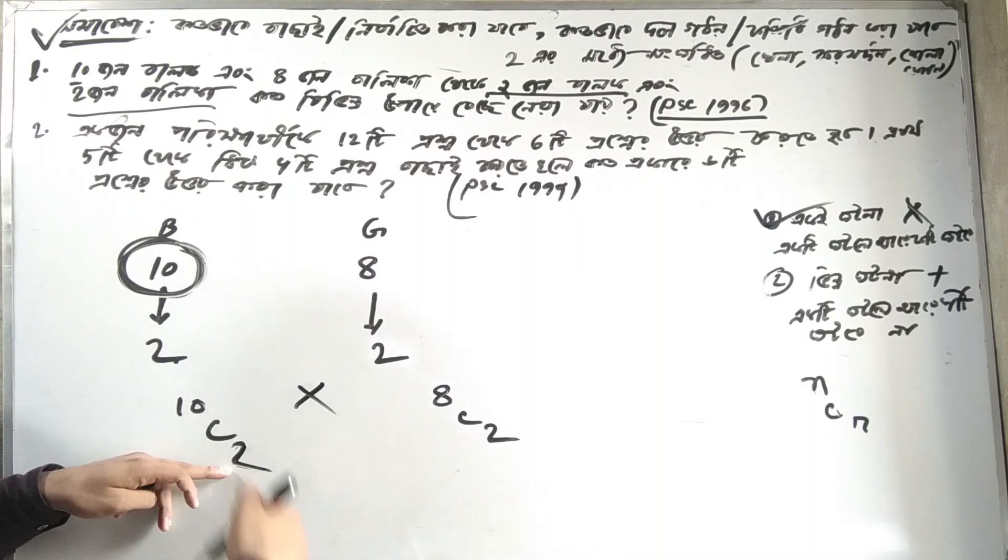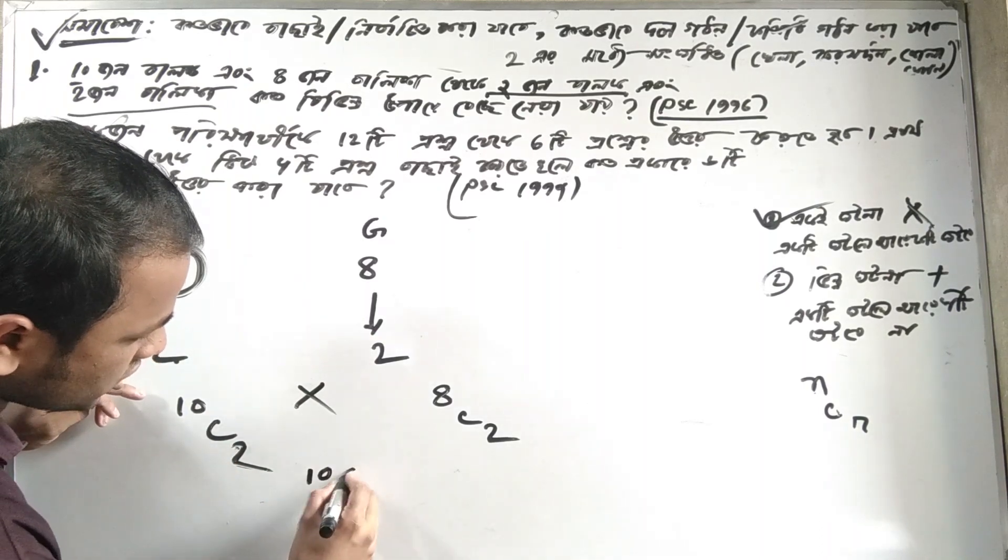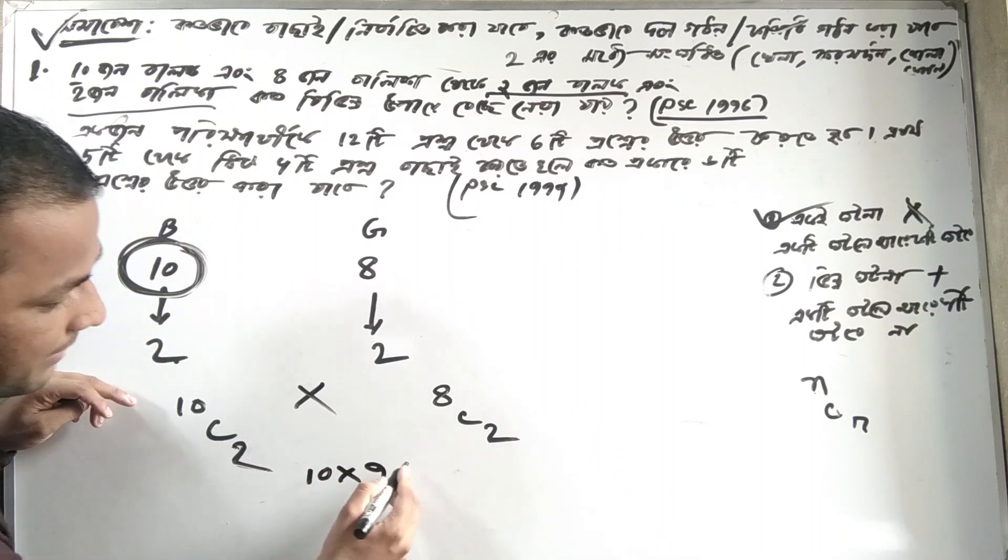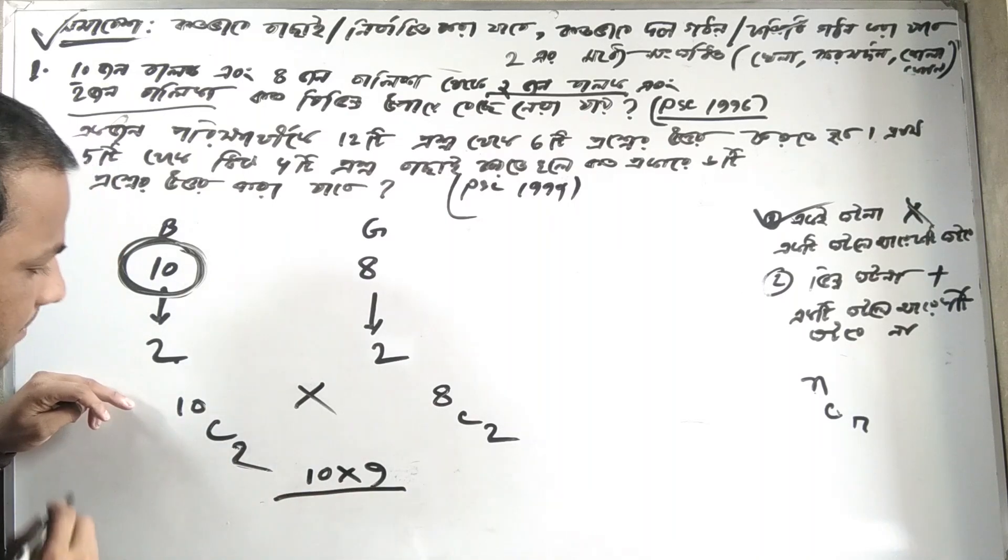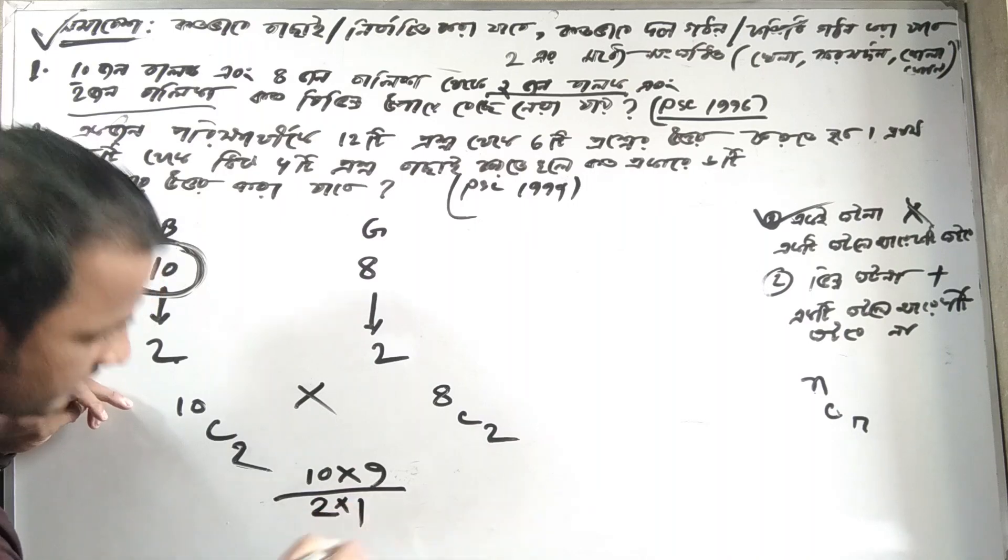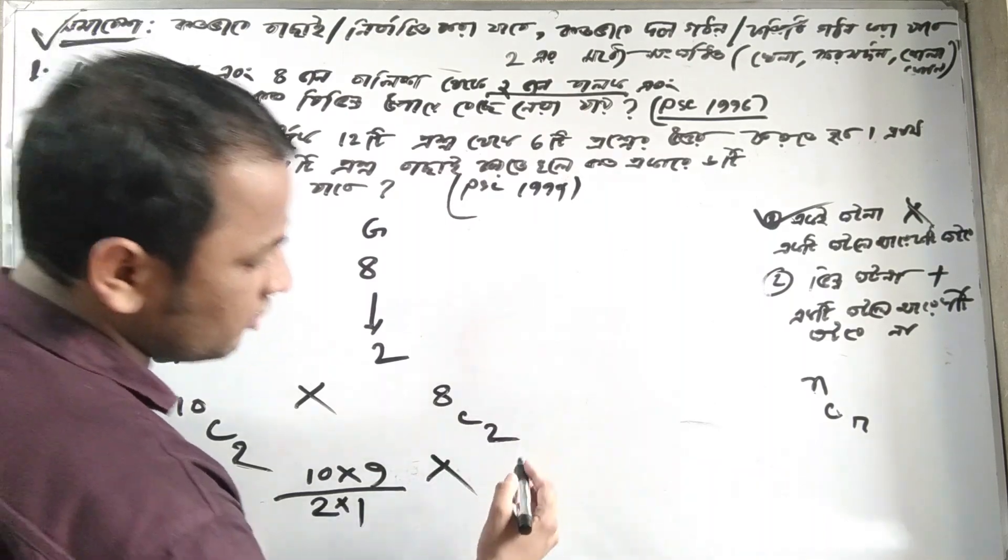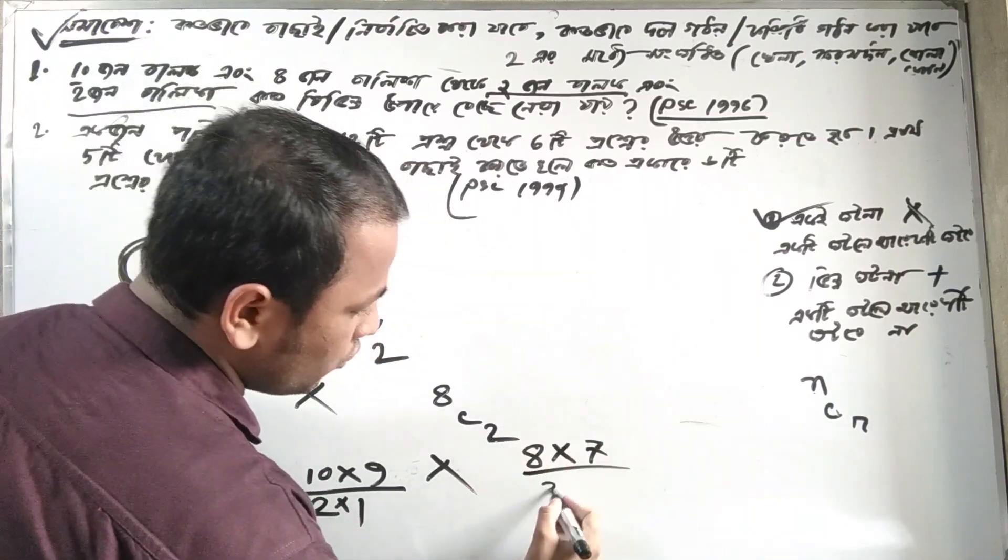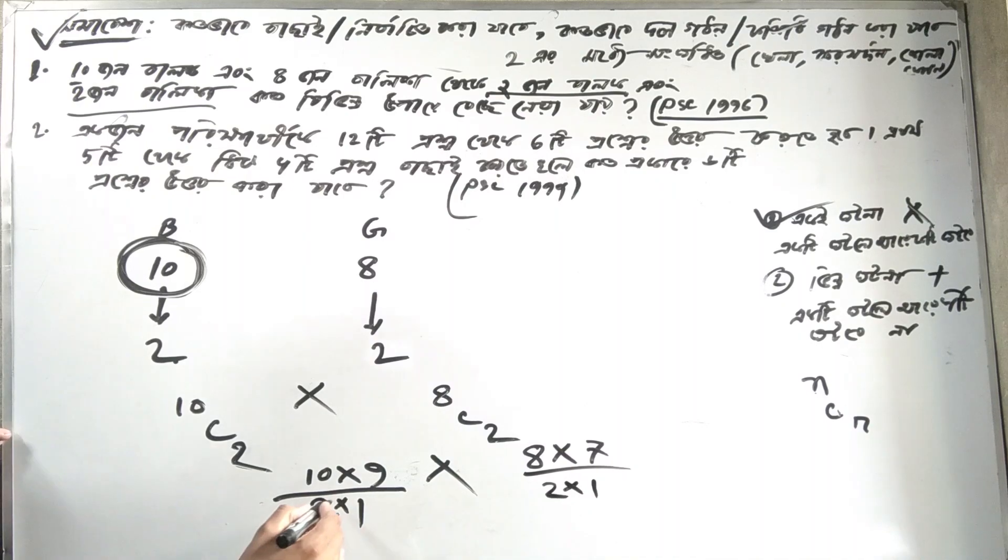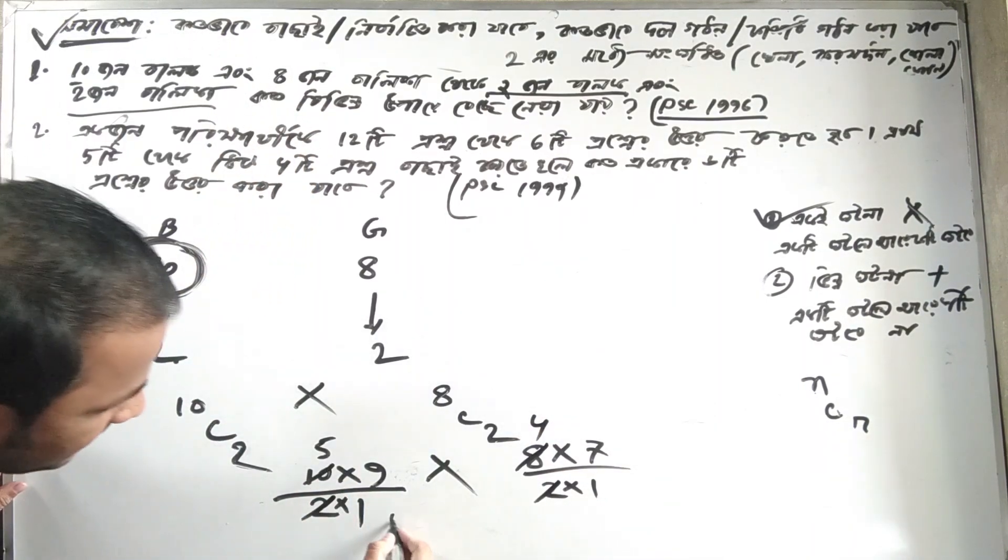Now let me explain the step-down query method. When you have multiple questions, you can use a step-down approach. With 8C2, you calculate the number of ways step by step. The step-down method helps break down complex problems into manageable calculations.